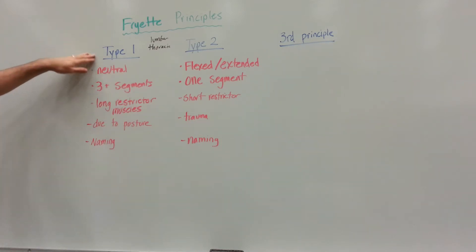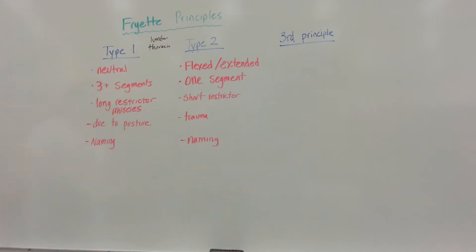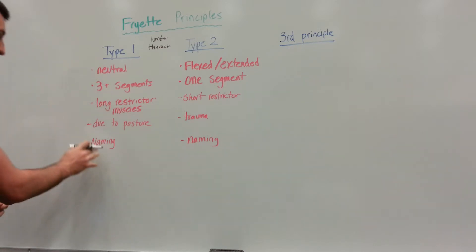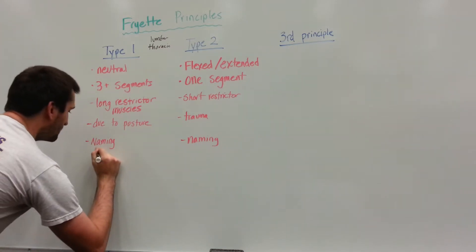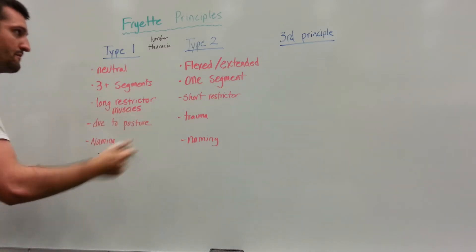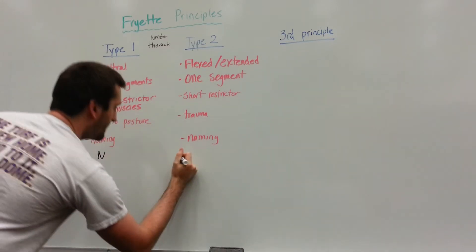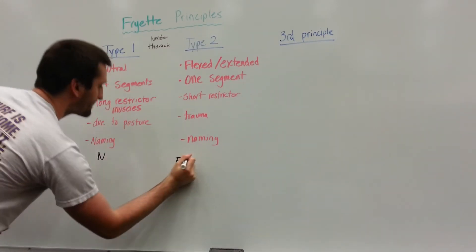For type 1 somatic dysfunctions, the naming will always be neutral. For naming of type 2, we're going to be flexed or extended.